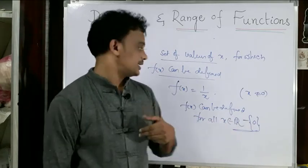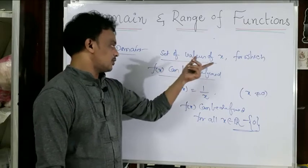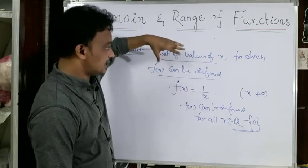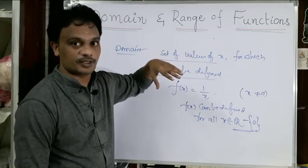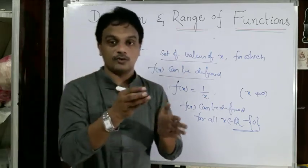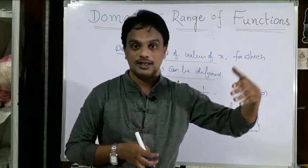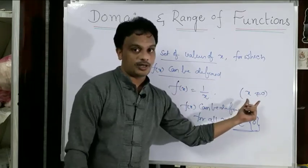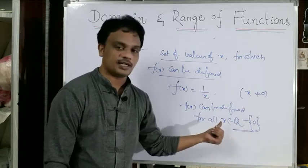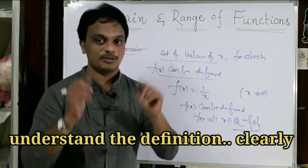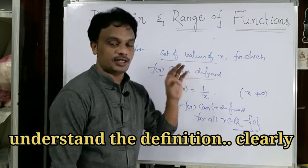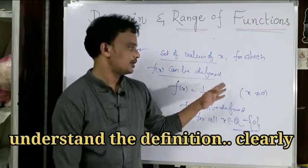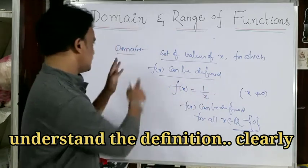Here the very important thing is: domain means the set of values of x where the function can be defined. In addition, we also focus on where the function cannot be defined. We find those particular points and remove them from the set of real numbers to get the domain. Please keep in mind where the function can be defined and also where it cannot be defined — both are very important.